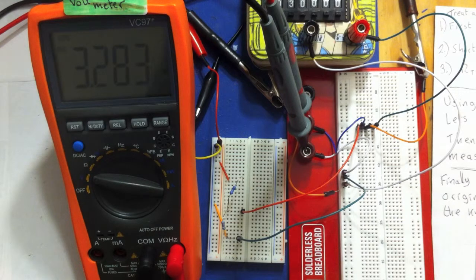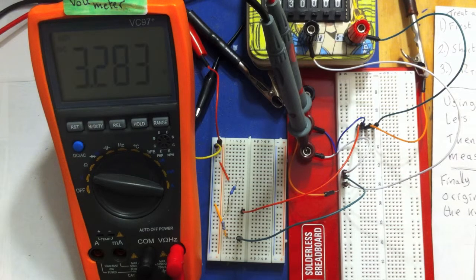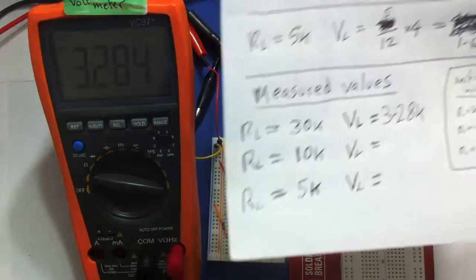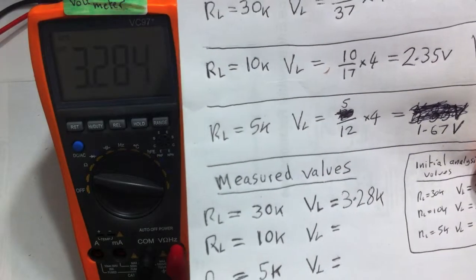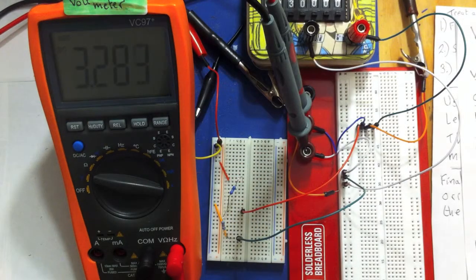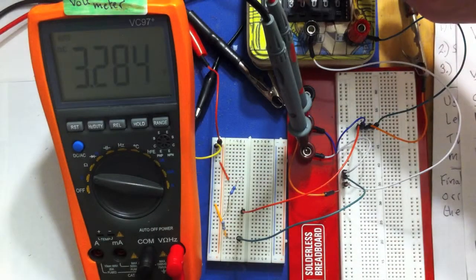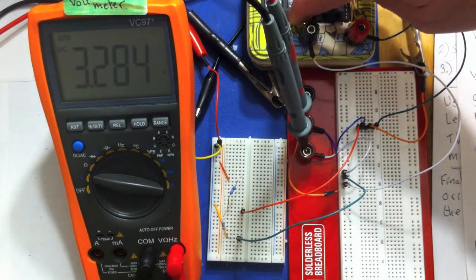Let's see what the voltage drop is across that load resistor. I'm going to write that down as 3.28. So that's for the 30k. So I'll just show you that I've written that down. That's our initial value there for 30k.